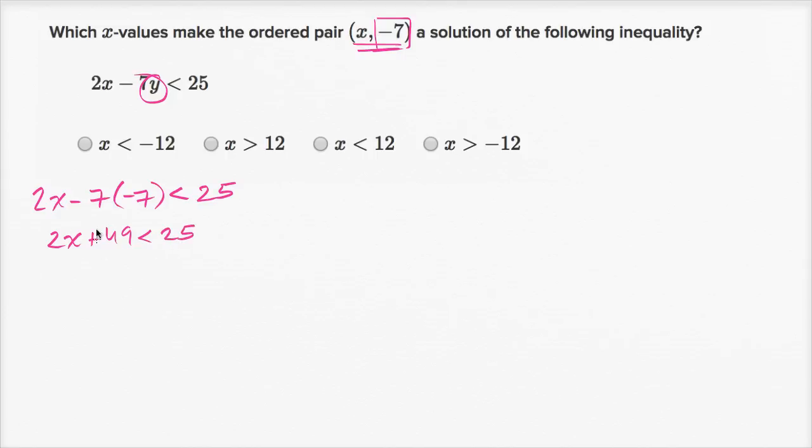Now if I just want to isolate the x on one side, which we see for these inequalities up here, so we could subtract 49 from both sides. So subtracting 49 from both sides, we get 2x is less than, what is this? Let's see, 49 - 25 would be positive 24, so this would be -24.